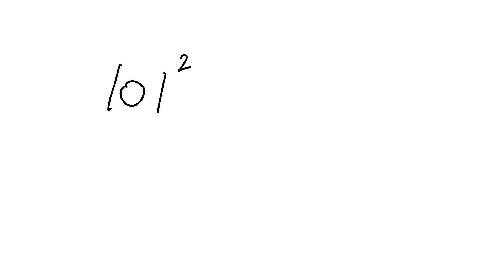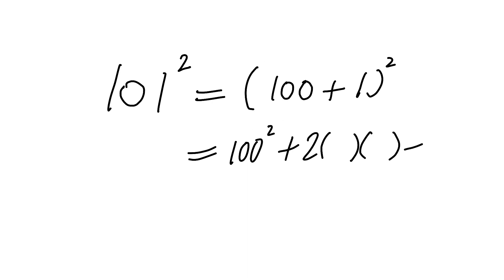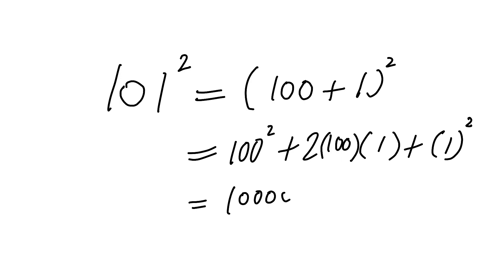This video is going to tell you how to find this value without using a calculator. You just use the perfect square identity. You identify which one will be a and which one will be b — the terms respectively — and at the end you can put it back together.